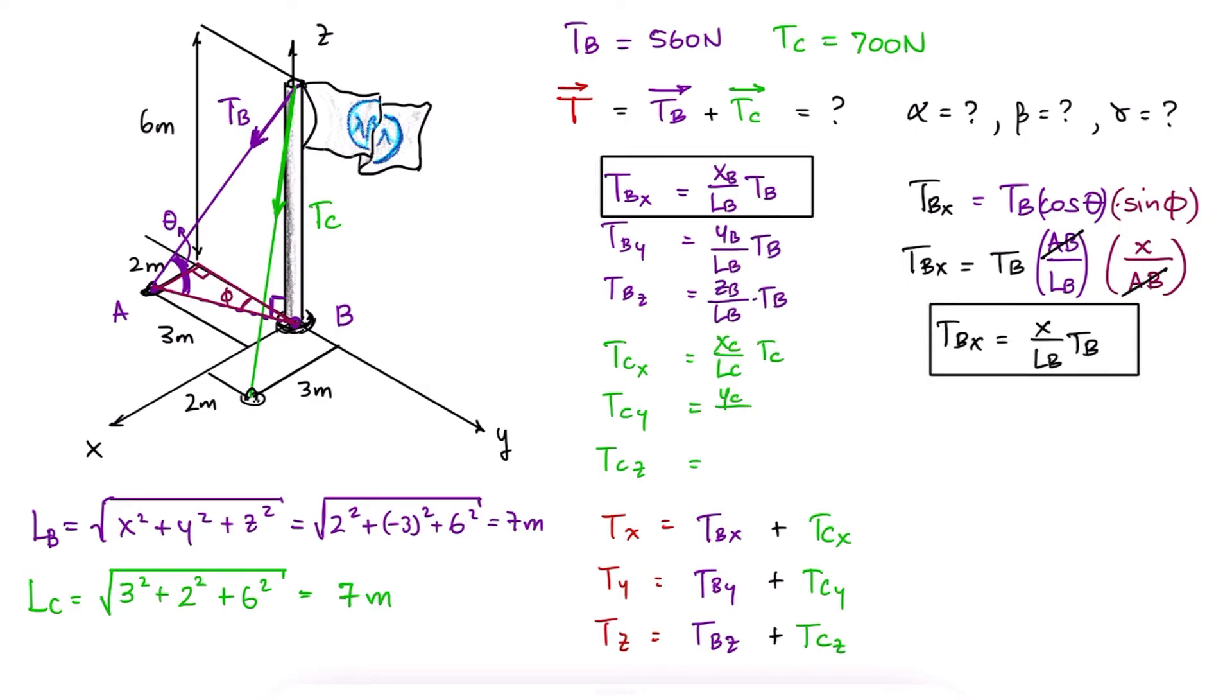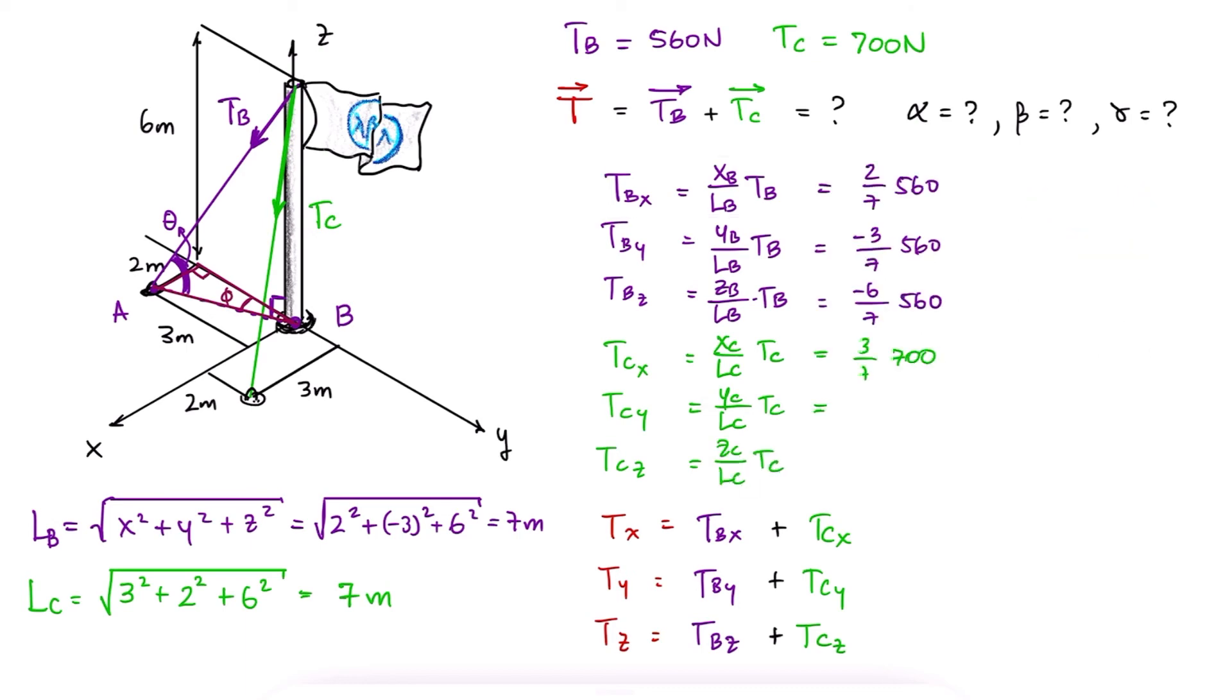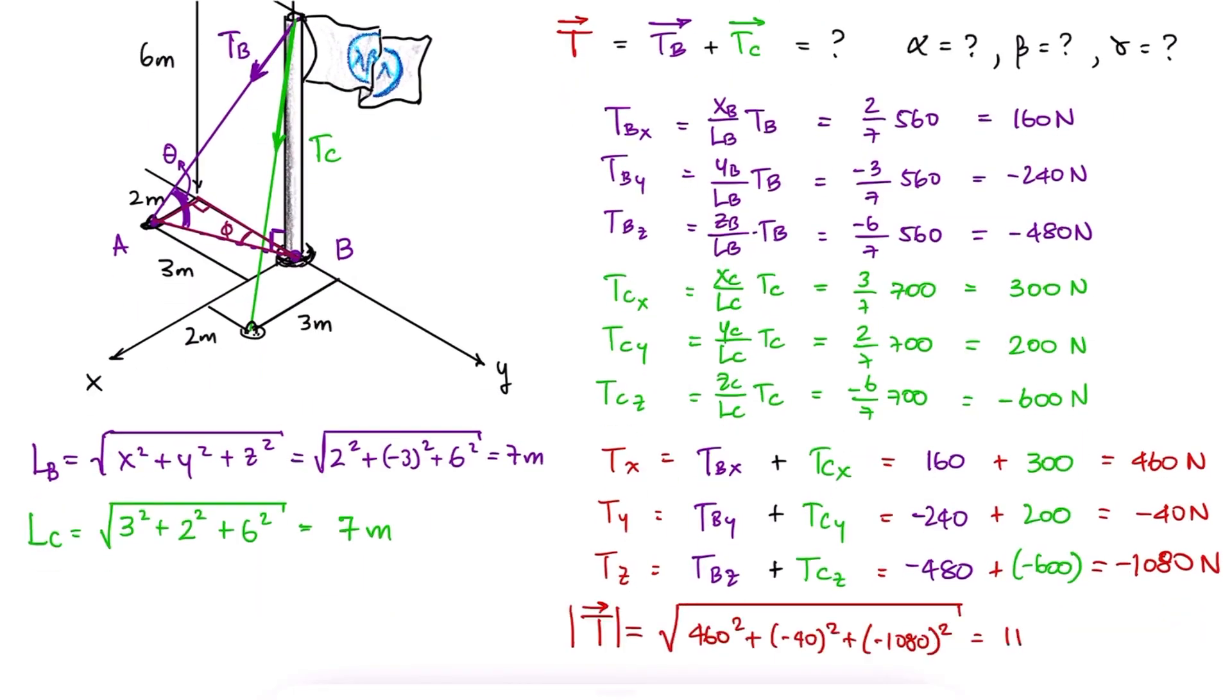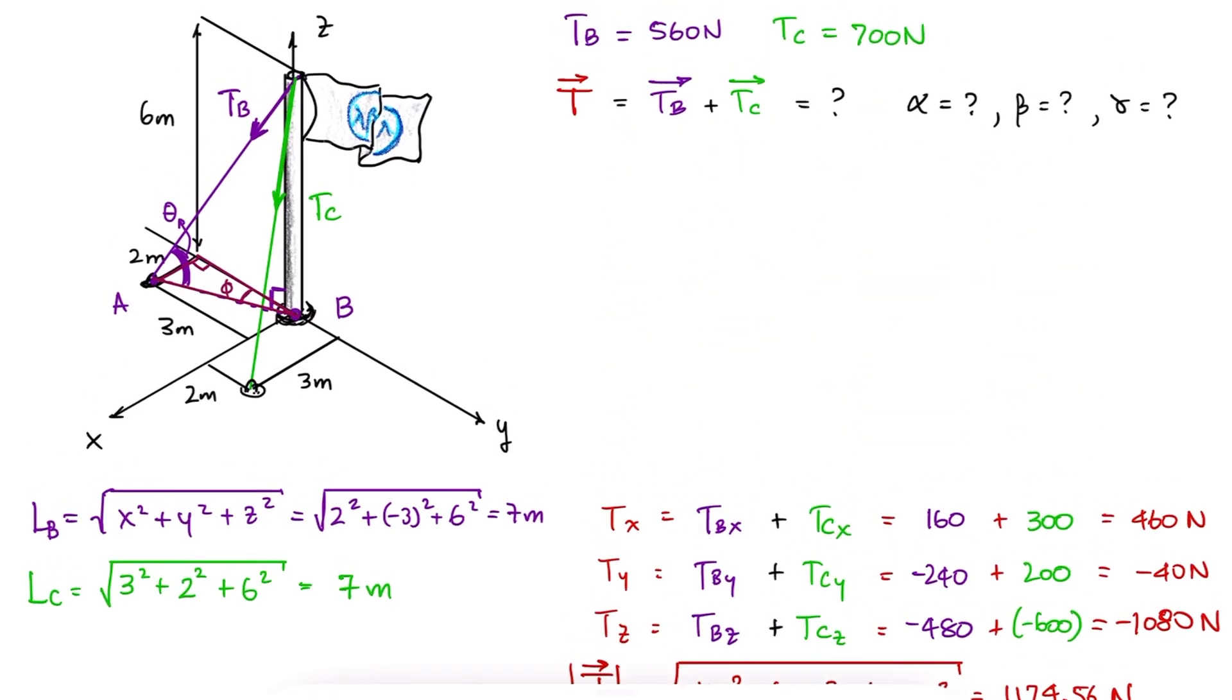Writing the components in terms of the variables and substituting the values, making sure that negative directions are noted, we find the components of the overall tension, and with them the magnitude of the force.